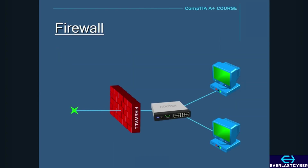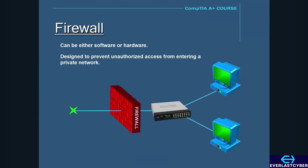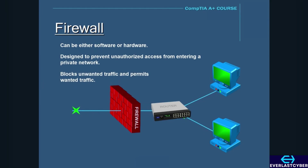A firewall can be either software or hardware. It is a system designed to prevent unauthorized access from entering a private network by filtering the information that comes in from the internet. It blocks unwanted traffic and permits wanted traffic. Basically, it filters incoming network data packets and determines by its access rules if they are allowed to enter the network.